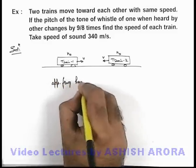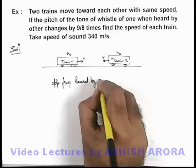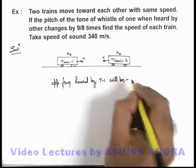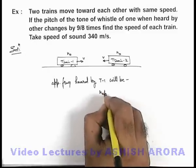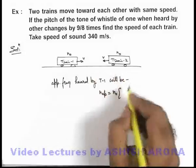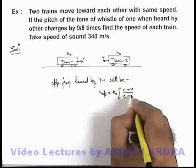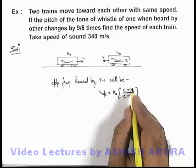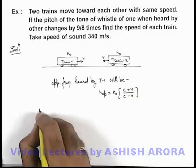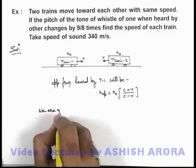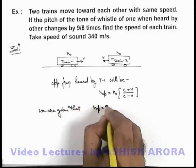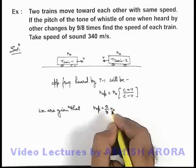In this situation, the apparent frequency heard by Train 1 will be: n₀ times (c + v) / (c − v), where the (c + v) term is due to observer motion and the (c − v) term is due to source motion. We are given that this apparent frequency is 9/8 times n₀.